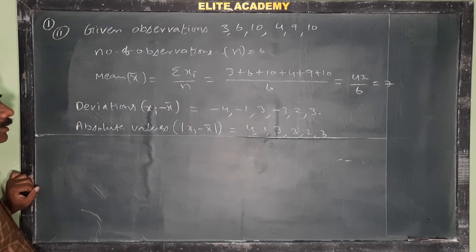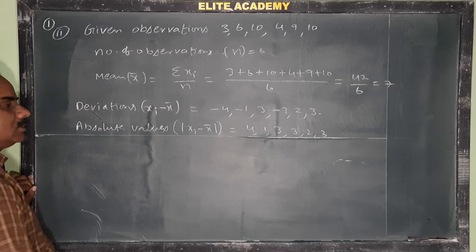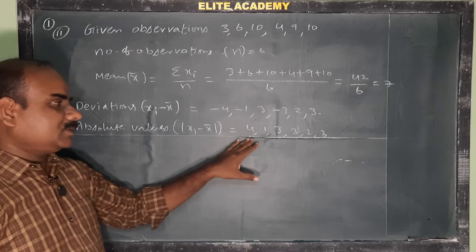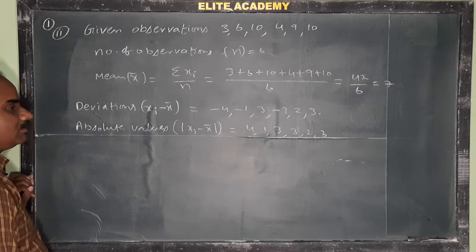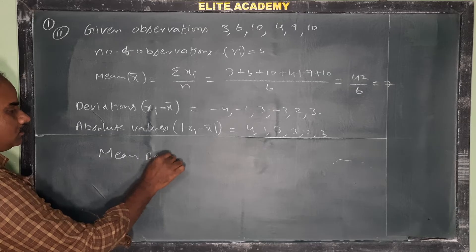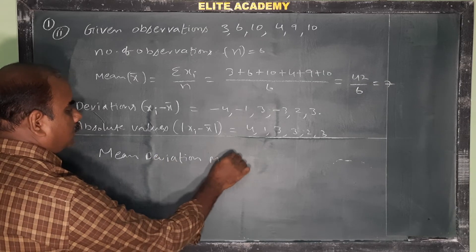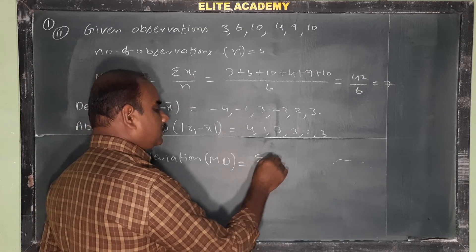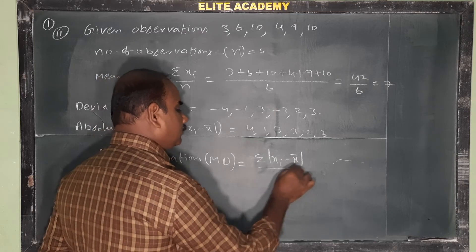Now we have to find the mean of these absolute values. That is called mean deviation. Therefore, mean deviation MD. The formula is: mean deviation for ungrouped data equals sigma modulus of xi minus x bar by n.